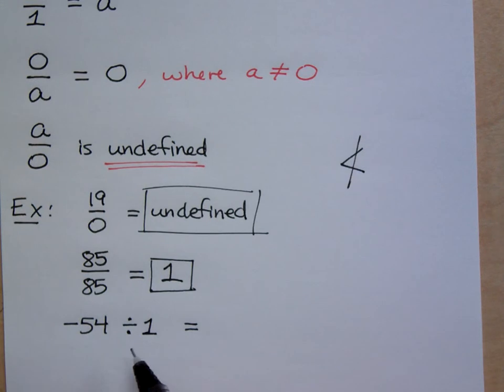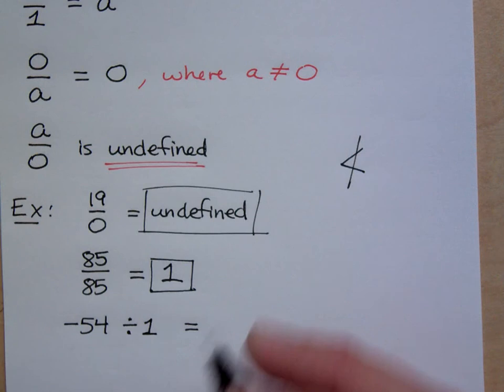Okay, so what about negative 54 divided by one? Any number divided by one is just that same number that you started with: negative 54.